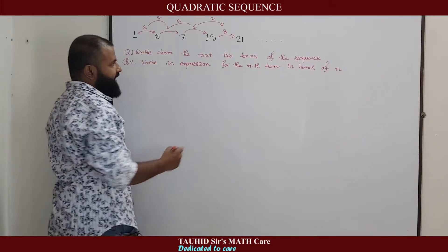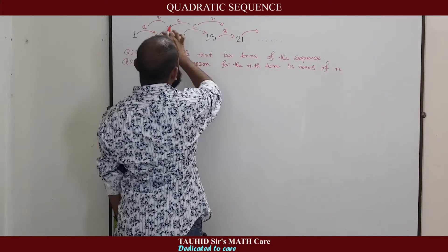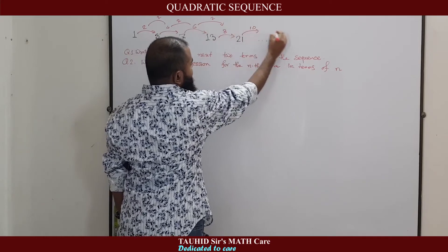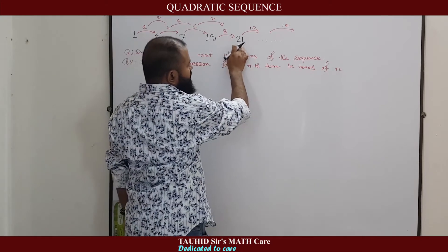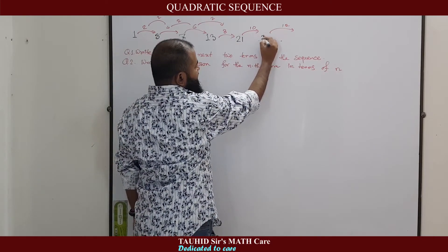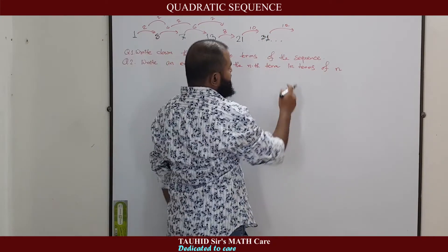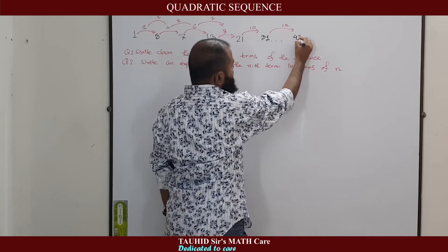Then, what will be the next difference? 2, 4, 6, 8, 10 and what will be the next? 12. So, the term immediately after 21 will be 21 plus 10, which is 31, and the term after that will be 31 plus 12, it will be 43.